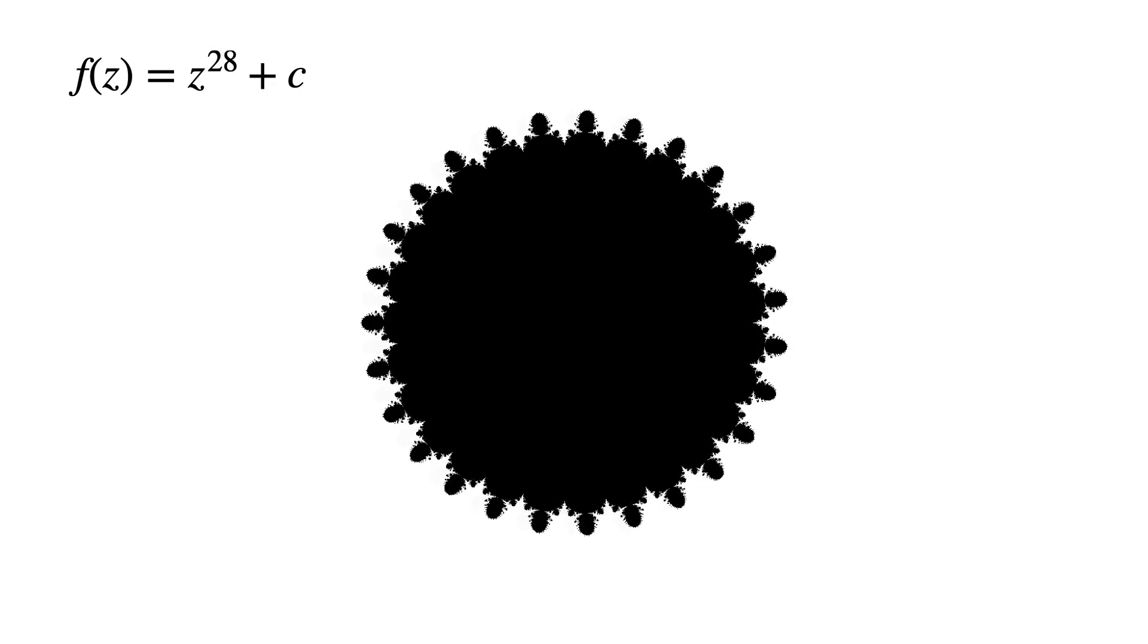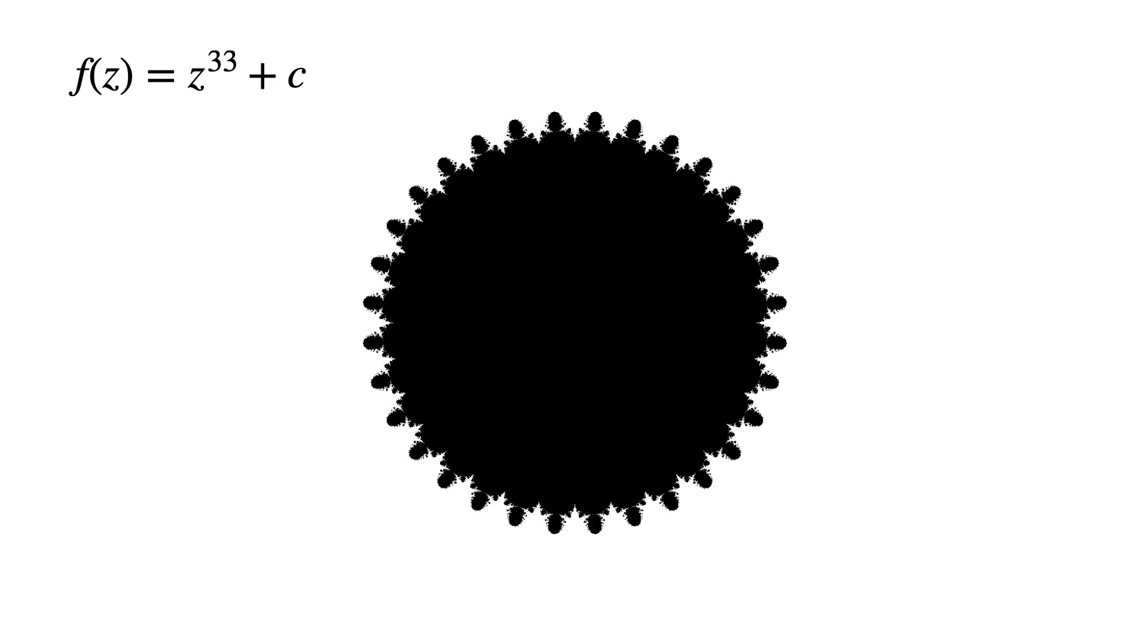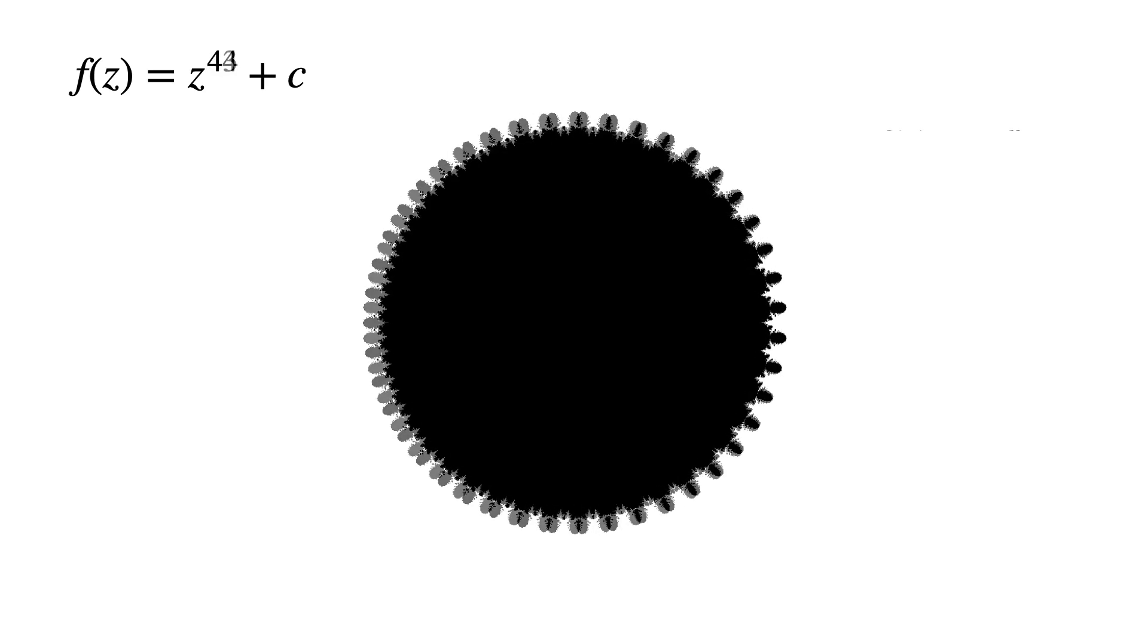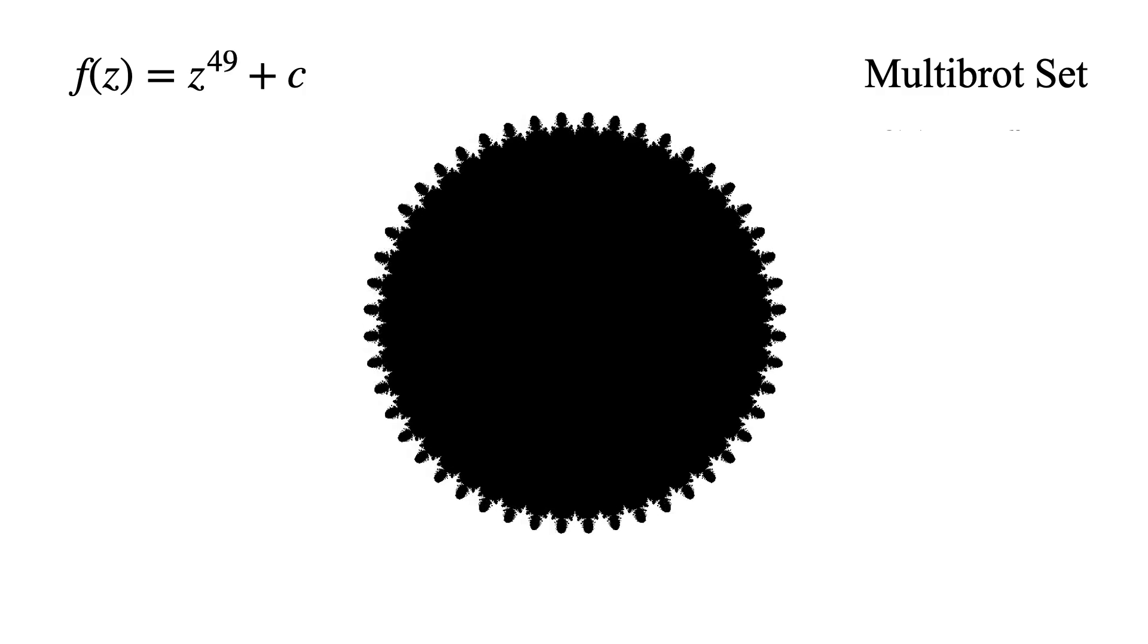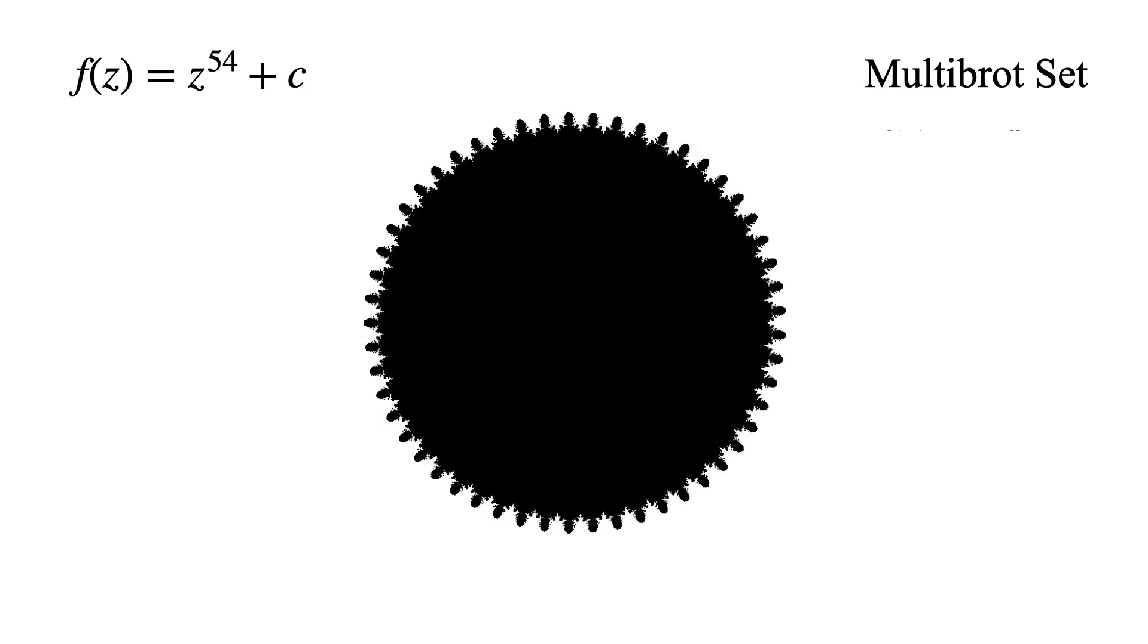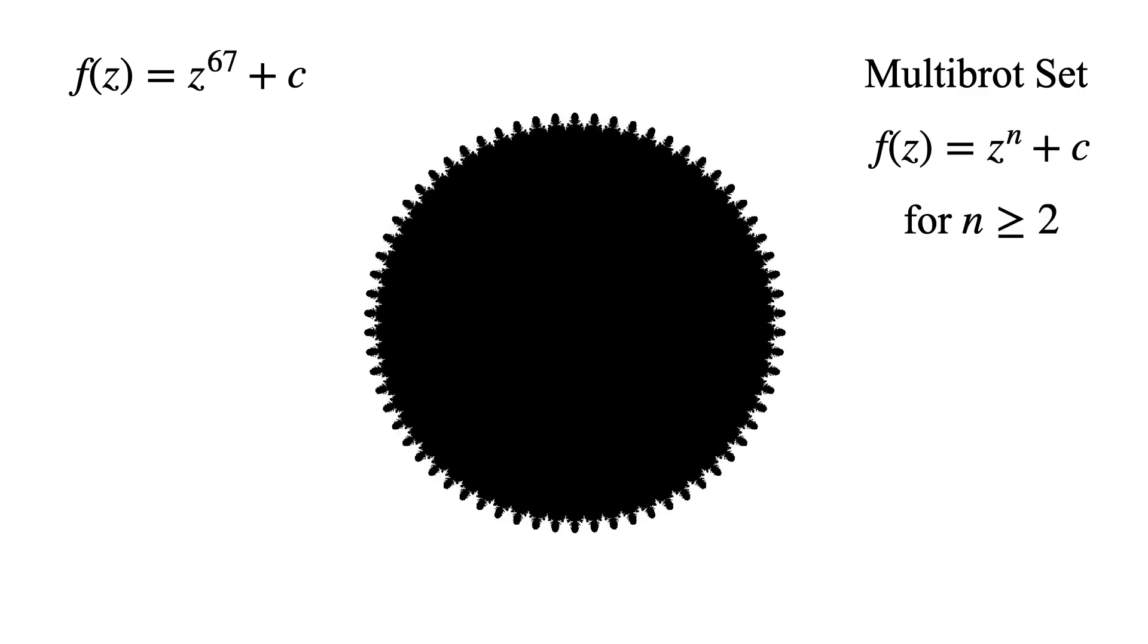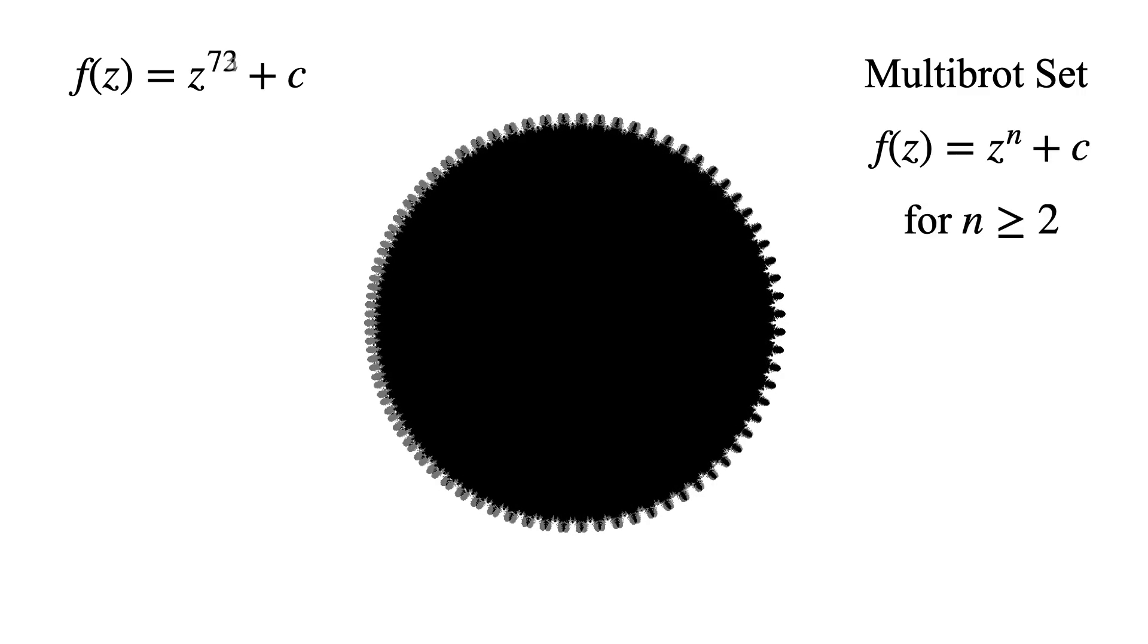It turns out that all of these structures belong to a set that is a generalization of the Mandelbrot set, and it goes by the name of the Multibrot set. It is defined by considering the points that remain bounded when iterating the function f(z) = z^n + c for any integer n ≥ 2.